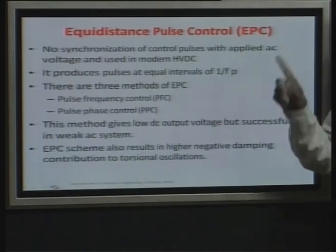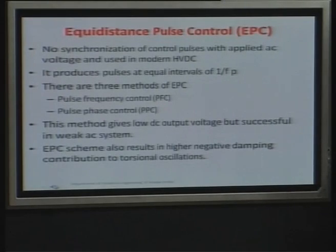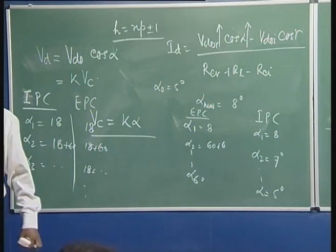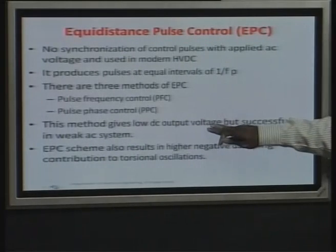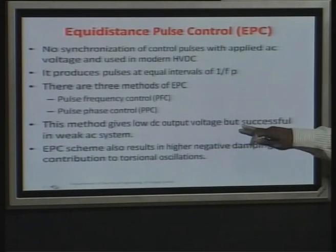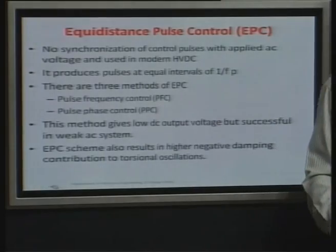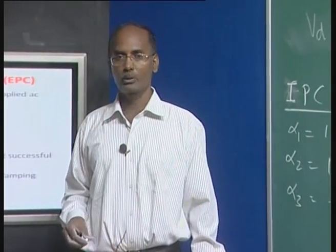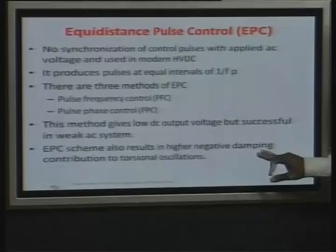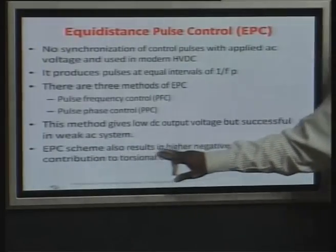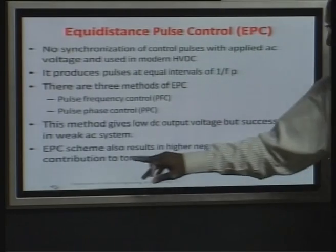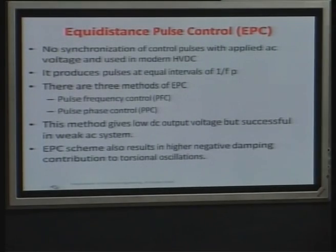This method gives lower DC output voltage but is successful even in weak AC systems — instability problems are avoided. However, EPC schemes also result in higher negative damping contribution, especially to torsional oscillations. Torsional oscillation especially arises when having thermal power plants, where harmonics entering the mechanical system cause oscillations in torsional torque due to matching frequency — sometimes called sub-synchronous resonance in the AC system.